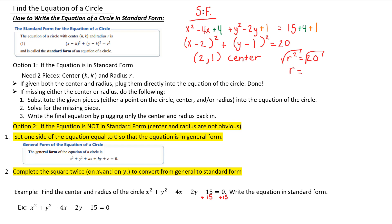So the square root of 20 would be, break this up into a perfect square. Square root of 4 times square root of 5. And the square root of 4 is 2 times the square root of 5. So that's your radius. We have a center of 2, 1 and a radius of 2 square root of 5.